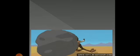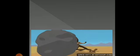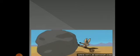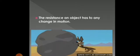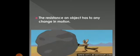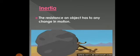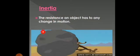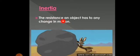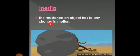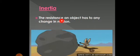Look at this coyote. This coyote is trying to push a rock, and this rock refuses to move — it is resisting to move. The resistance in any object to change its motion is called inertia. So, inertia is the resistance an object has to any change in motion.